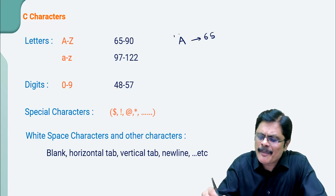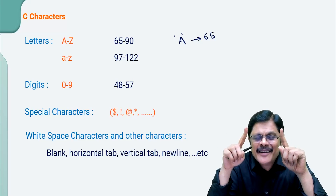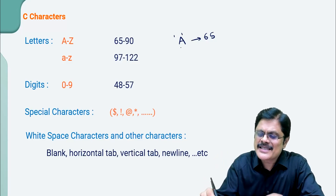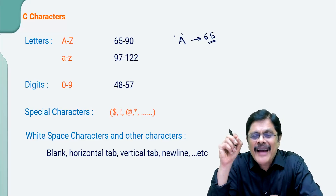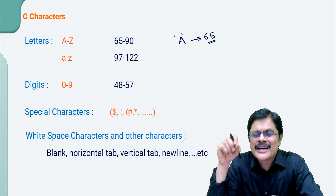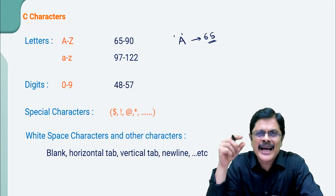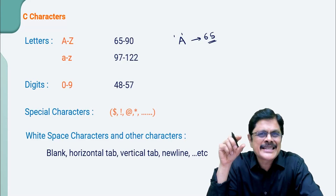We represent characters by writing the character within single quotes. This is the character and this is the value associated with it — that is called the ASCII value. For every character, we have a unique value which is called the ASCII value associated with it.